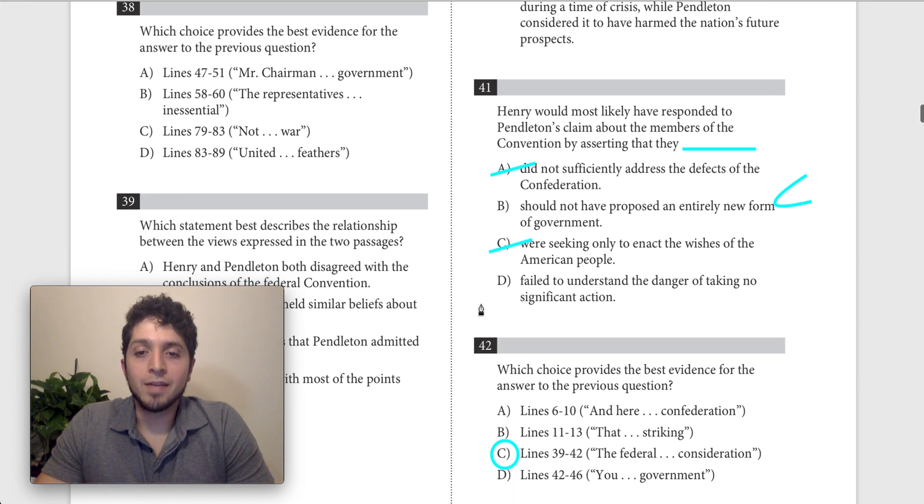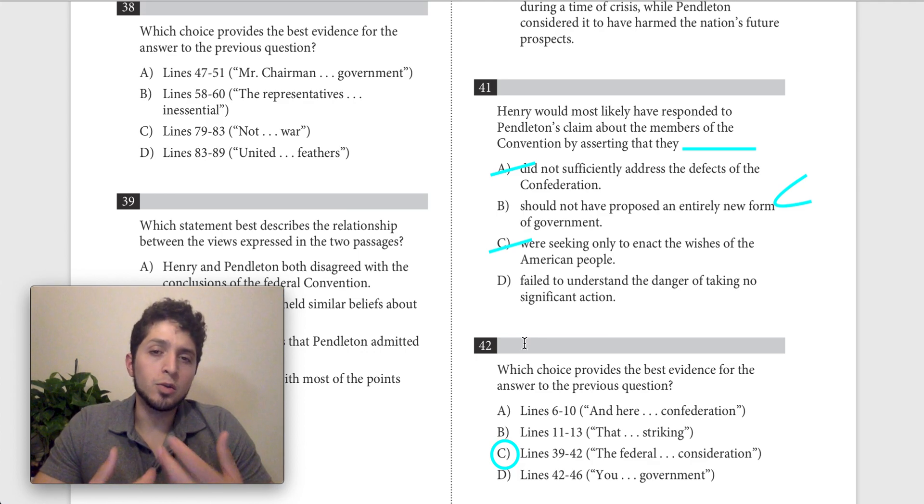Then we have D, which says they failed to understand the danger of taking no significant action. This might give us some pause because we know that Pendleton starts by saying, if we don't take action here, bad things are going to happen. We might lose our government forever. But I think that he, one, that's not an option for our texts where he's talking about they didn't understand the danger of taking significant action.